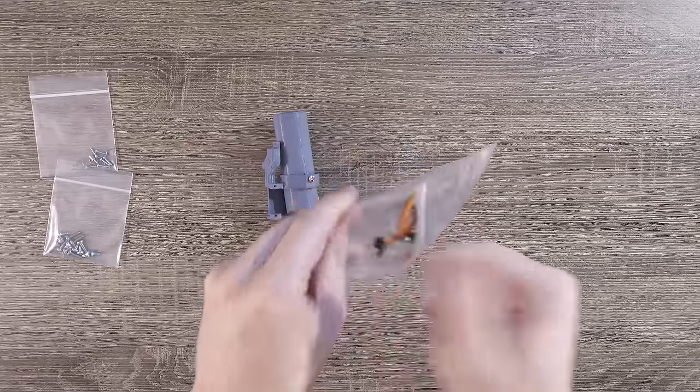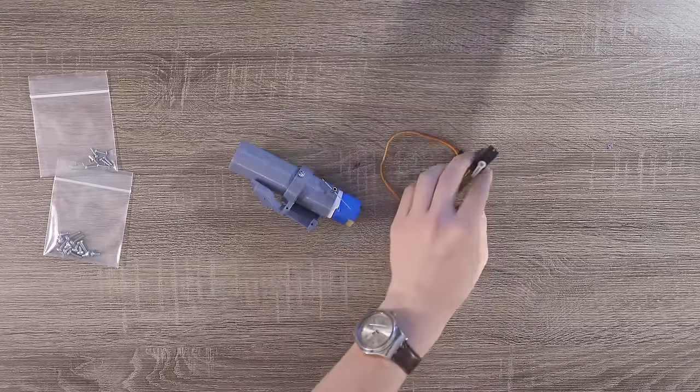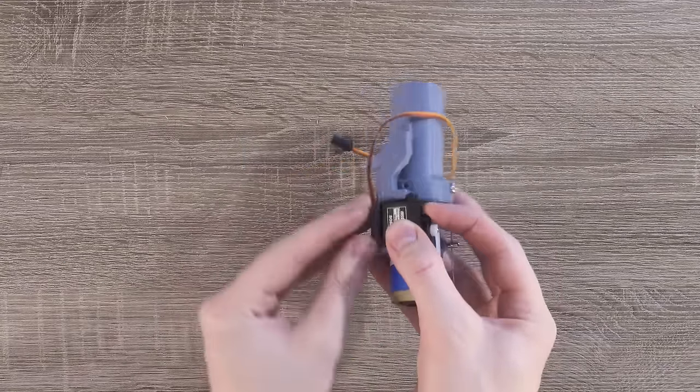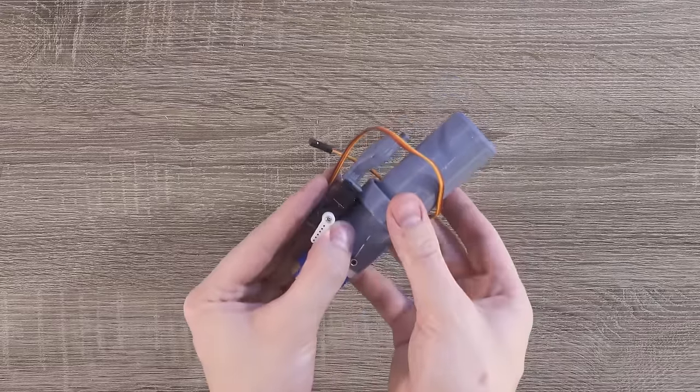From this bag, grab one of the two servos. With the servo's wire and arm pointing down, insert it into the bottom of the inner gimbal. Go ahead and thread the cable behind the back of the servo as well.